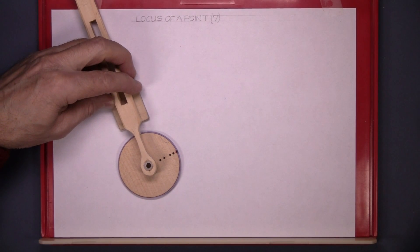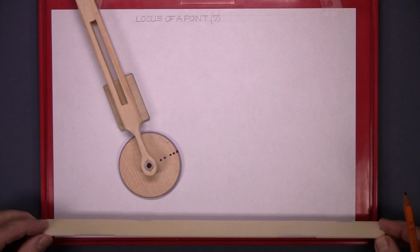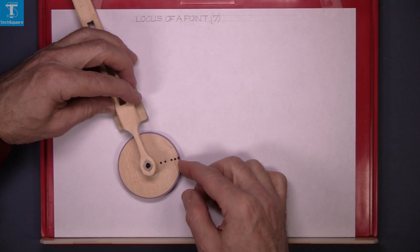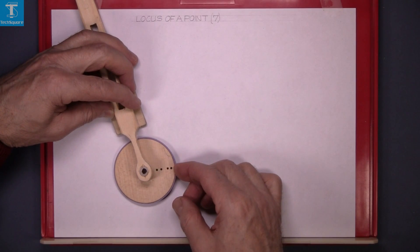The next exercise is locus seven. With the guide rule at the bottom here, I have this wheel that rotates like this.